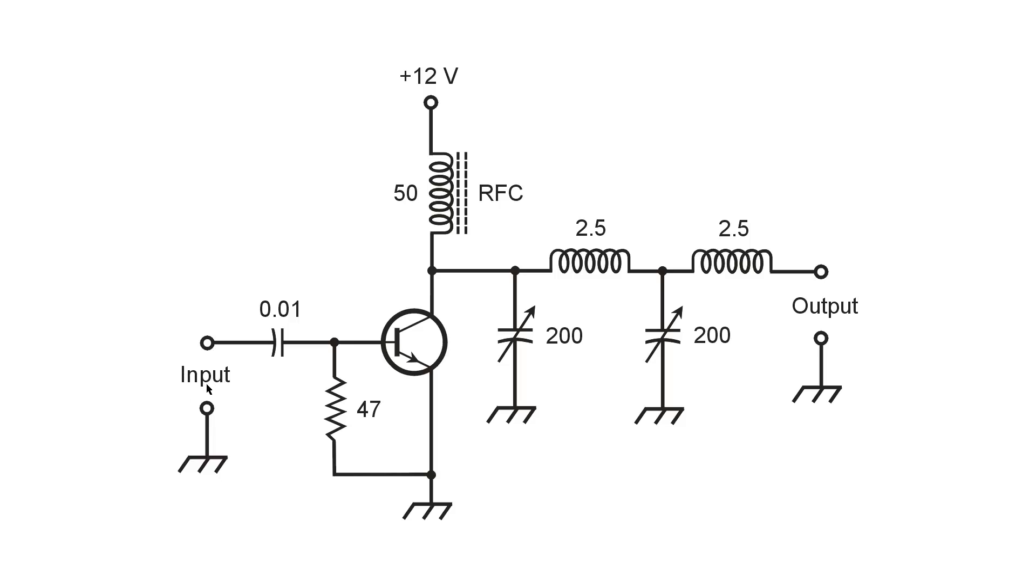That is to say, it keeps the bias the way it should be for this stage, yet it passes the radio frequency signal, because it's of a sufficiently large value, 0.01 microfarads. It puts the signal on the base of the transistor.